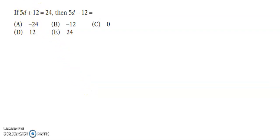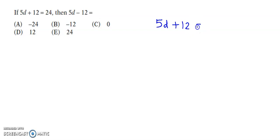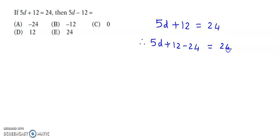If 5d plus 12 is equal to 24, then 5d minus 12 is equal to what? We have been given the equation 5d plus 12 is equal to 24. Now if we subtract 24 on both sides, we have 5d plus 12 minus 24, and on the right side we have 24 minus 24.